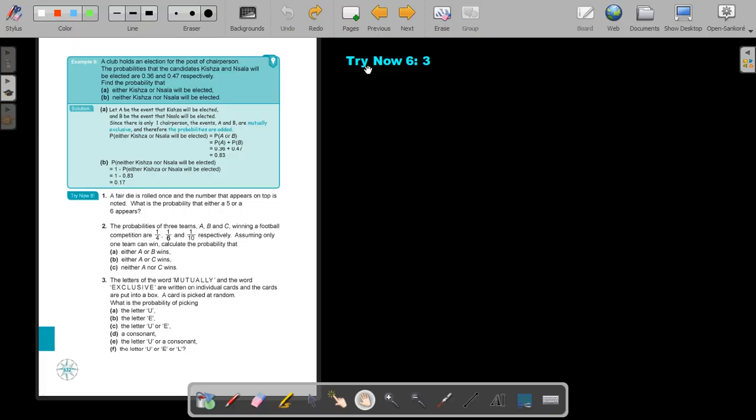Okay, stop the video and do Try Now 6 number 3. You can continue the video as soon as you are finished. Okay, let's start. The letters of the words mutually and the word exclusive are written on individual cards, and the cards are put into a box. A card is picked at random. Okay, let's write down the words. Do it in capital letters. It helps you and leave a little bit of space between the letters just to identify it a little bit better. So the capital letters help you with the L and the I's especially. So this mutually. And then the other word is exclusive.